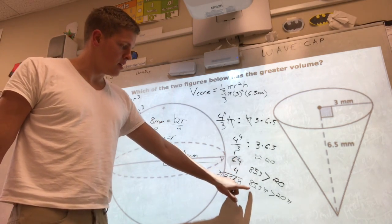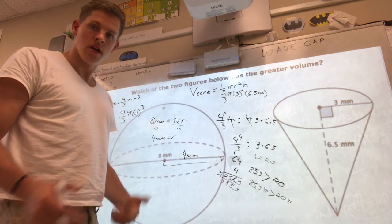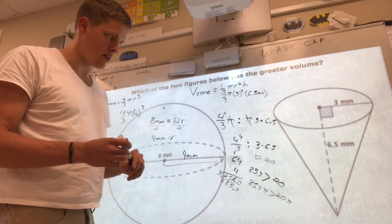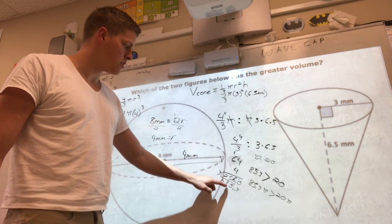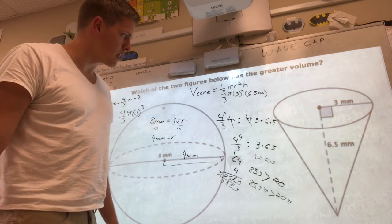If we decided that 85 is too close to whatever number came over here, you know, we'd want to take the extra time to make sure we actually figure out what 3 times 6.5 was, or maybe add in a couple more decimals.